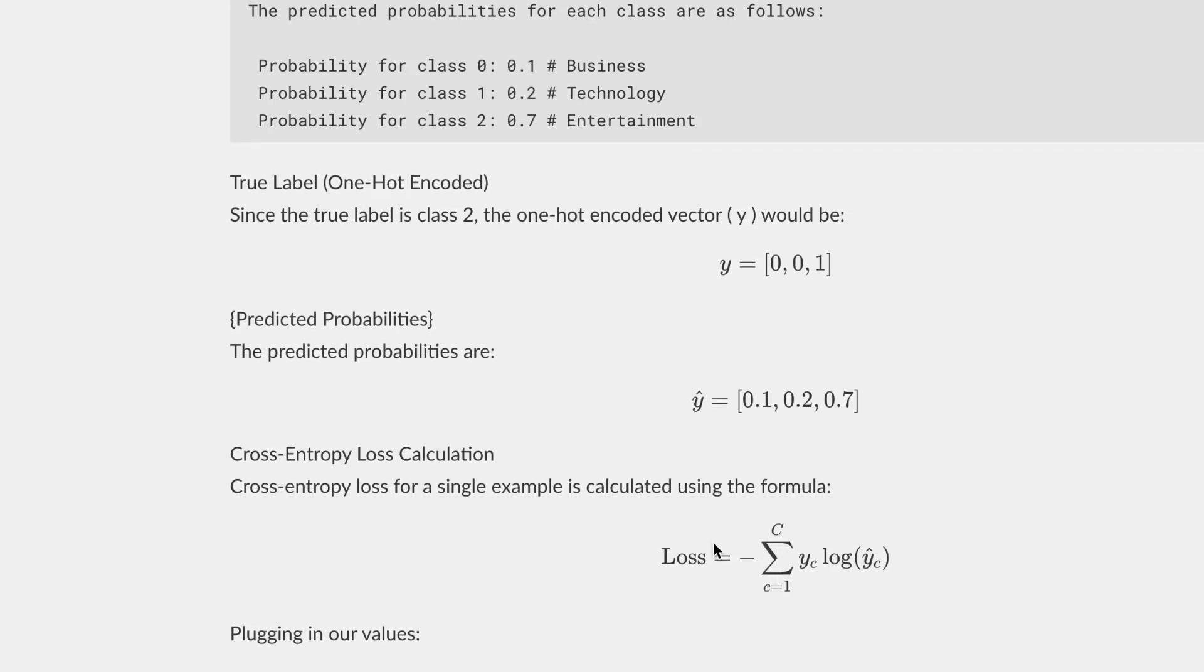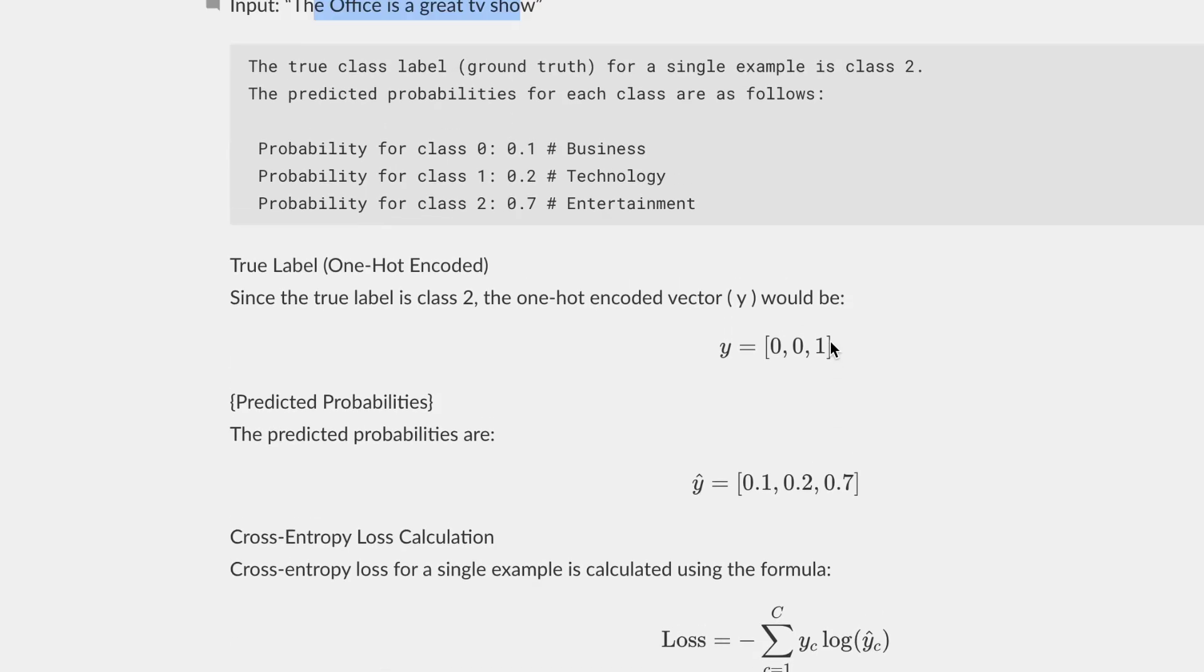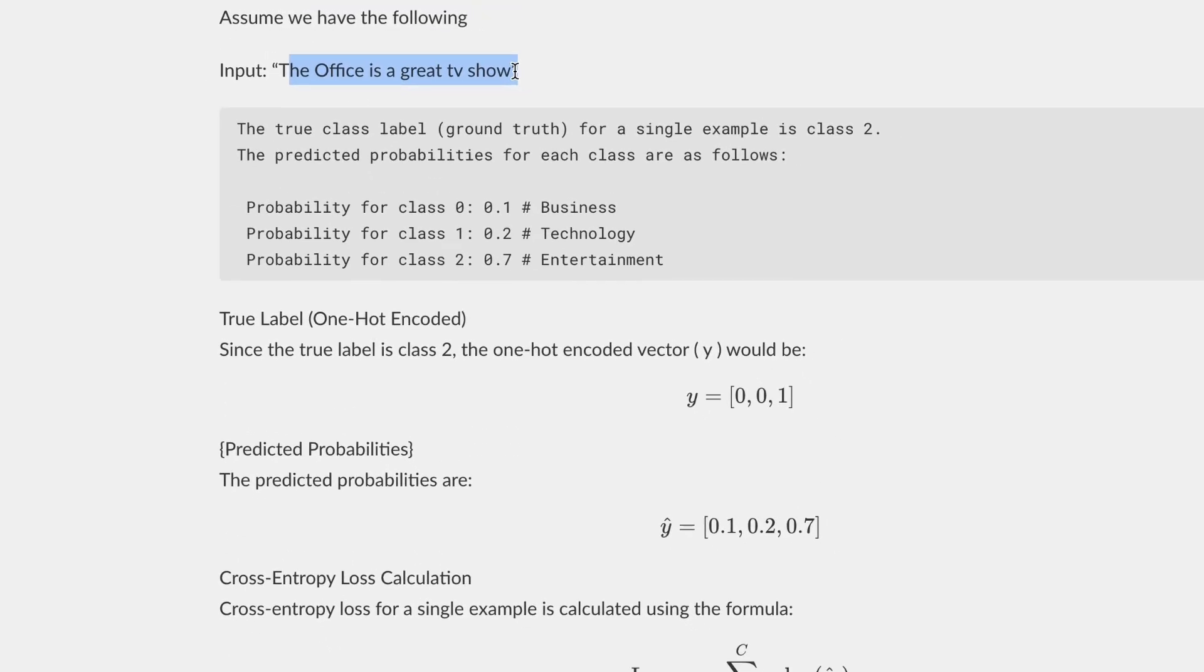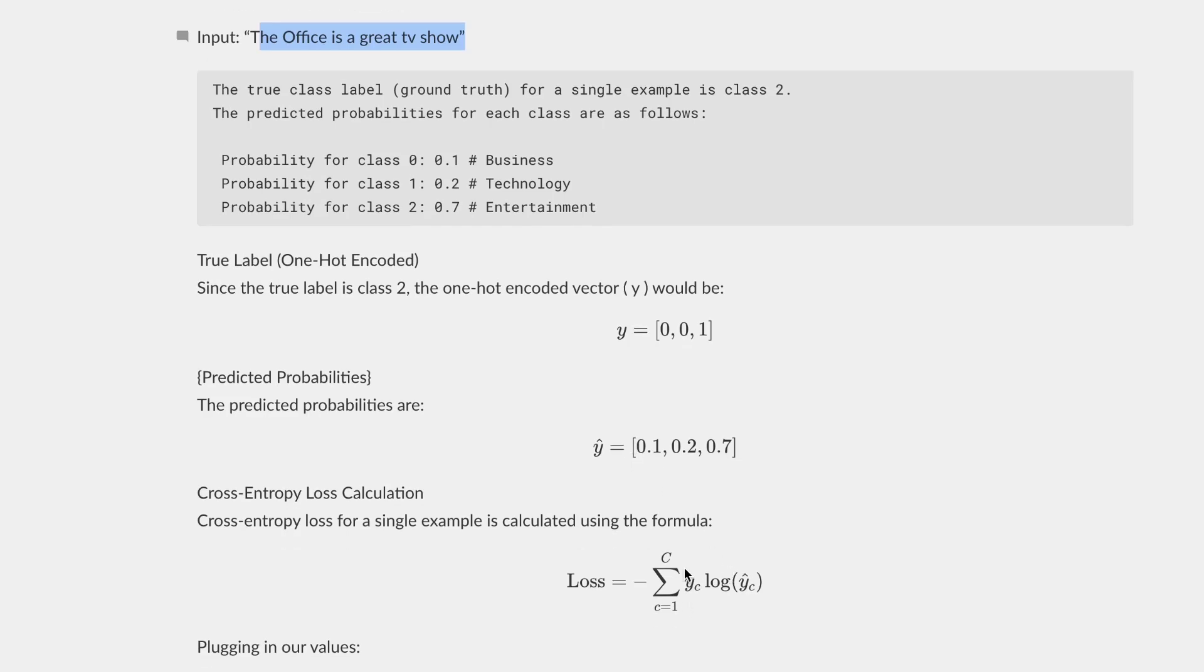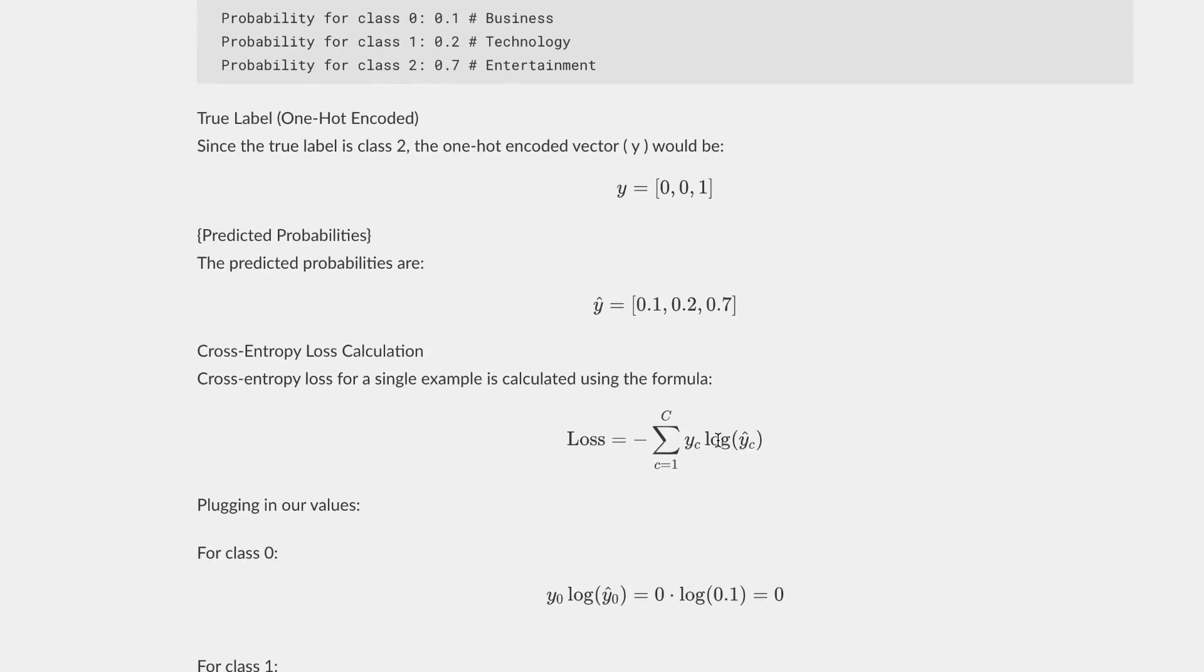You would just add up the losses for every single input. If we had other inputs besides The Office is a great TV show, you would just sum them up. You have to plug in the values. And this yc over here is the y correct.